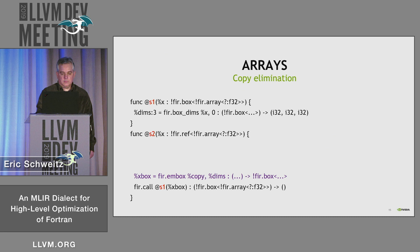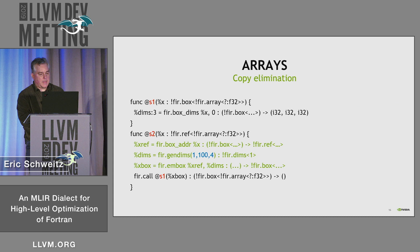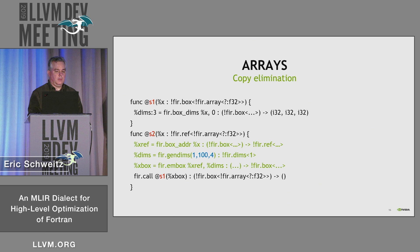So we get rid of that copy and do a little rewrite. We can pass the dimension information — exactly like the Fortran slice operation — one to 100, stride by four, embed that in the box, pass that to S1, and get rid of the copy. This takes some Fortran awareness to know we can do this.